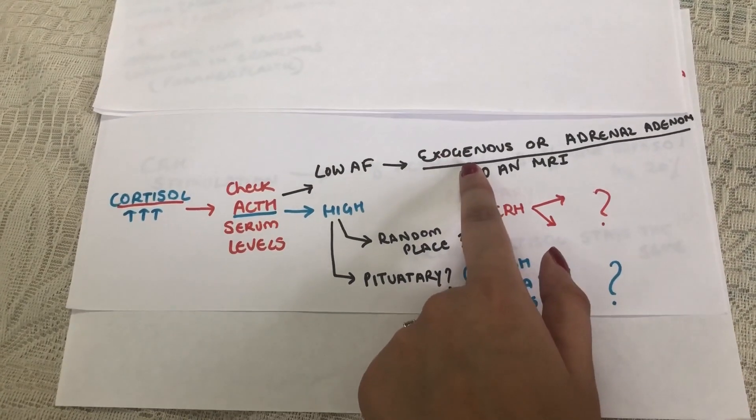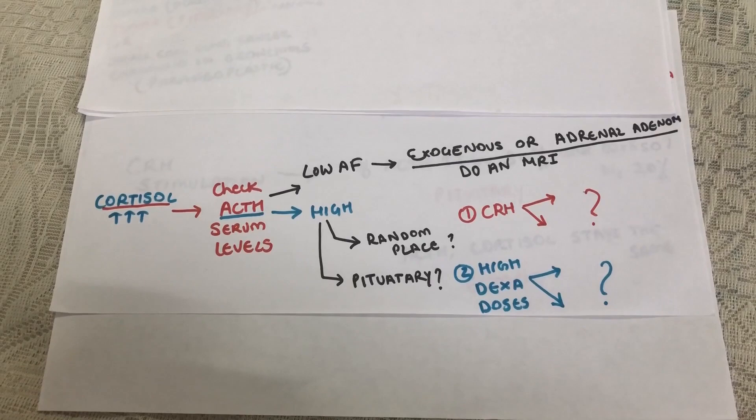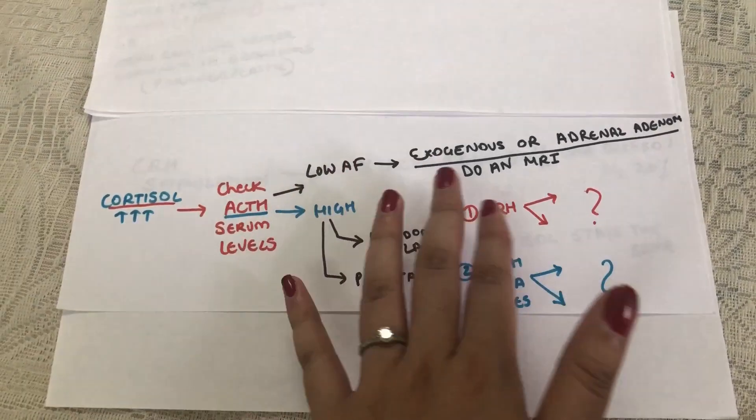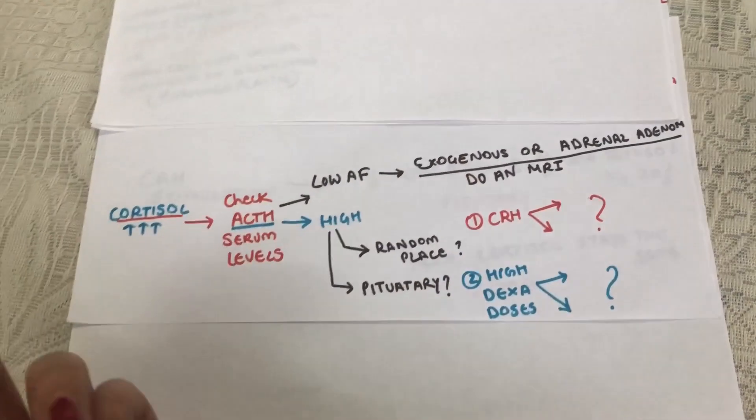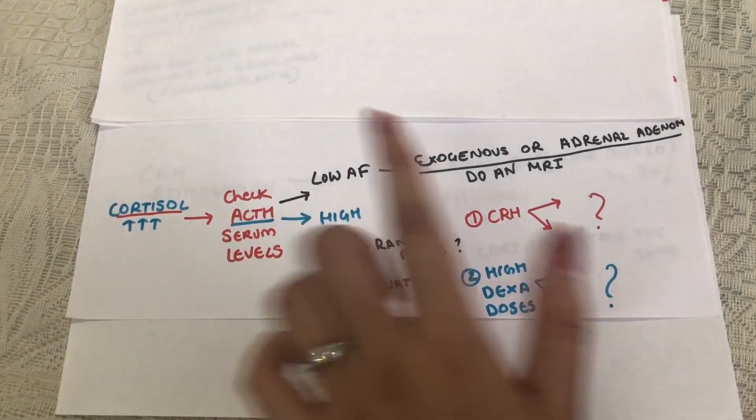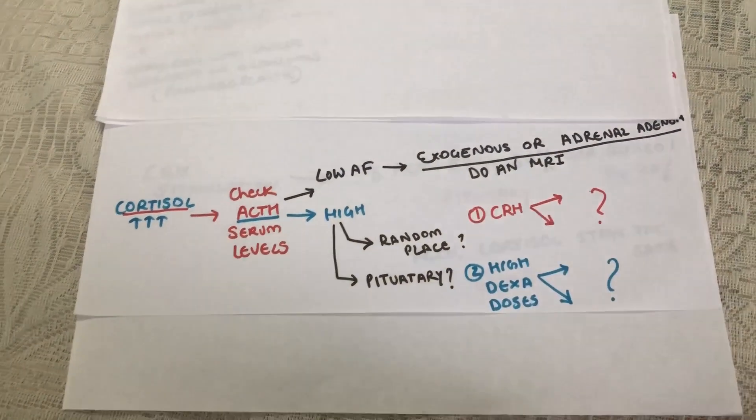You could have just asked the person if he was taking glucocorticoid steroids, and if he says yes, then all this wasn't really necessary. But if he says no, I wasn't taking anything, then you should do an MRI and confirm the mass in the adrenals.